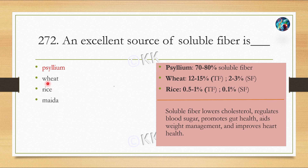Psyllium contains 70 to 80% soluble fiber. Wheat contains 2 to 3% soluble fiber, and rice contains 0.1% soluble fiber. Wheat has 12 to 15% total fiber, and rice has 0.5 to 1% total fiber. Soluble fiber lowers bad cholesterol levels, regulates blood sugar, promotes gut health, aids in weight management, and improves heart health.